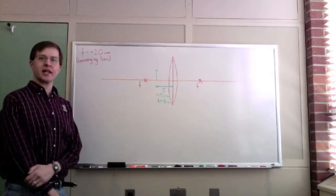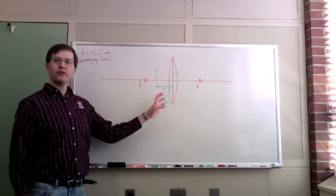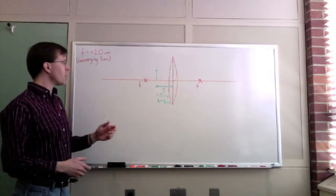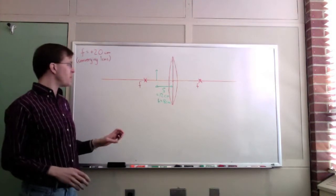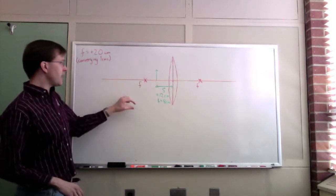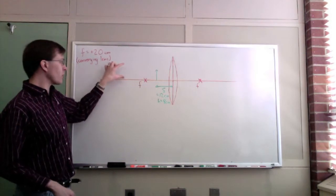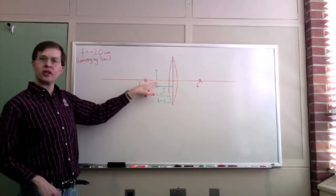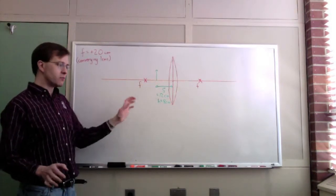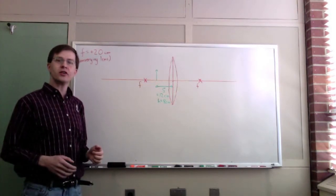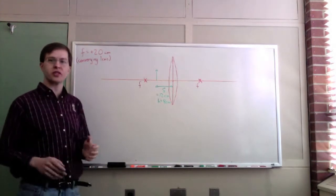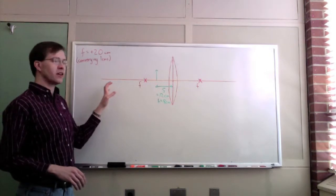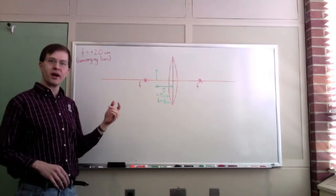I'd like to do another ray tracing example. This is again a converging lens with a focal length of 20 centimeters, just like our last example. But this time the only change I've made is I've taken my object and instead of having it located farther away from the lens than the focal point, I've made it located closer to the lens than the focal point. I want to look at the ray tracing procedure and see what it tells us about where we can locate the image.